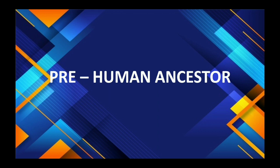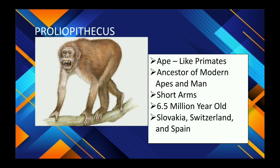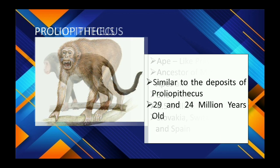First, we have Propliopithecus — an ape-like primate and ancestor of modern apes and man, with short arms. It is 6.5 million years old, discovered in Slovakia, Switzerland, and Spain. Their incisor teeth were vertical rather than directed forward, and molars had five cusps each.